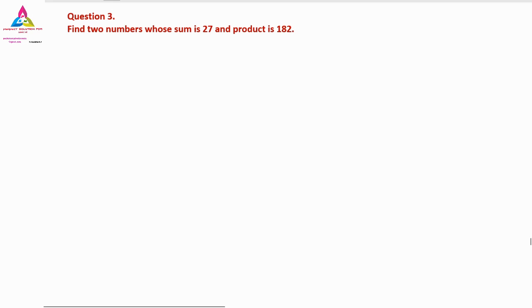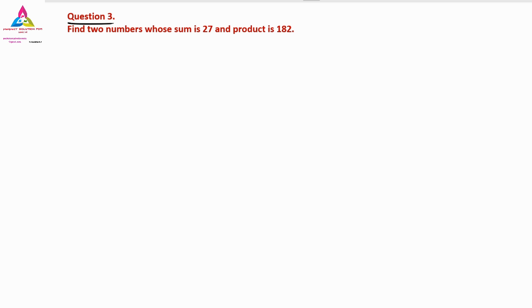Here we have the question. Several members have not done the sixth question problem, so I will solve it later. We will go through the third, fourth, and fifth questions first. So the third question: find the two numbers whose sum is 27 and the product is 182. The question is correct.